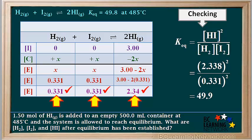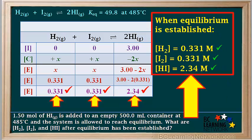So we can restate the final answer: when equilibrium is established, the concentration of H2 is 0.331 molar, the concentration of I2 is 0.331 molar, and the concentration of HI is 2.34 molar.